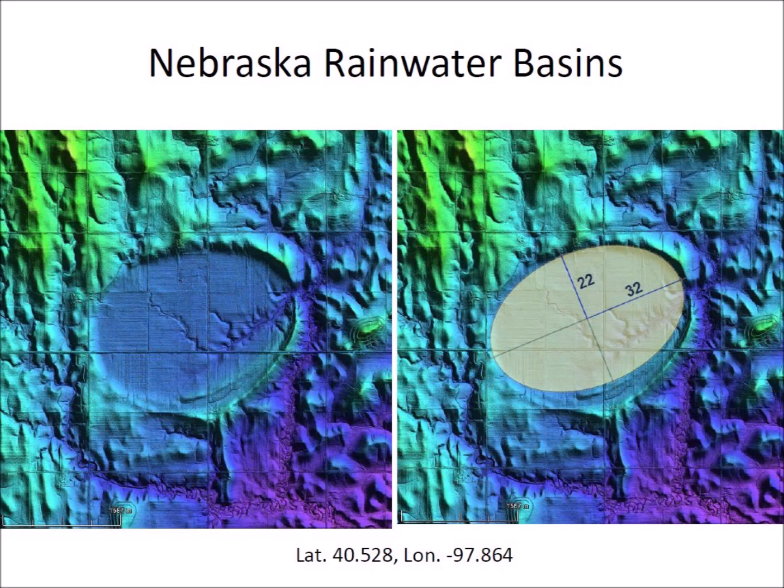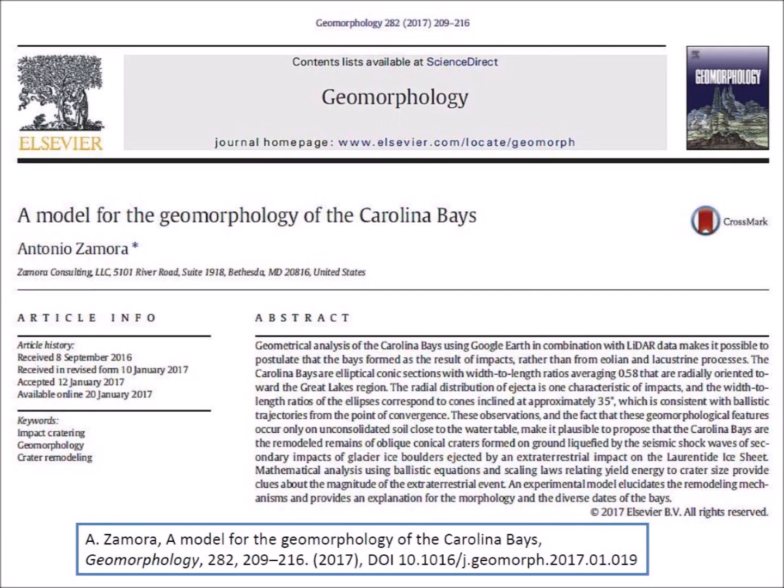The major axes of the Nebraska Rainwater Basins and the Carolina Bays intersect by the Great Lakes and Saginaw Bay, presumed to be the point of origin of the material that created the basins and bays. A 2017 paper published in the peer-reviewed journal Geomorphology proposed that the elliptical geometry of both features could be explained if they originated as inclined conical cavities, because ellipses are conic sections.